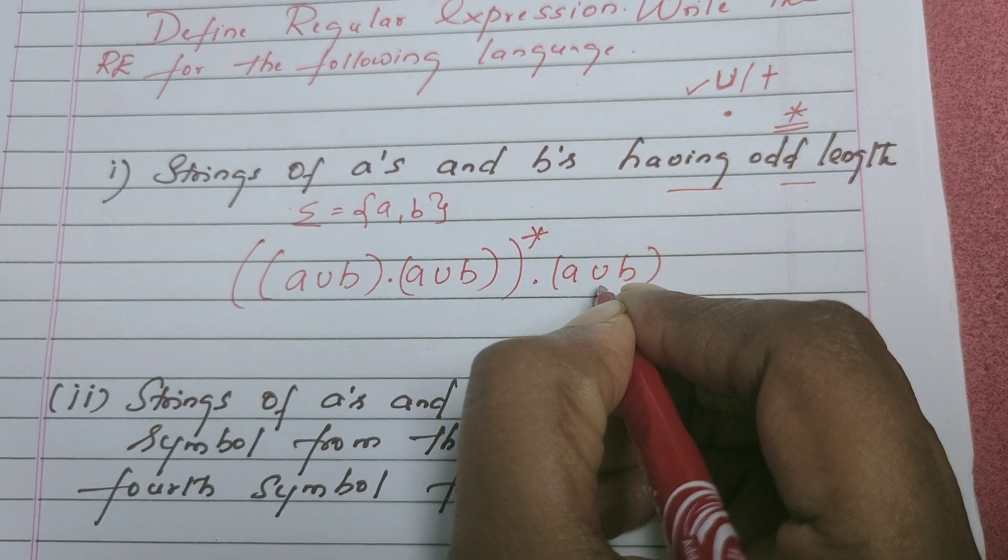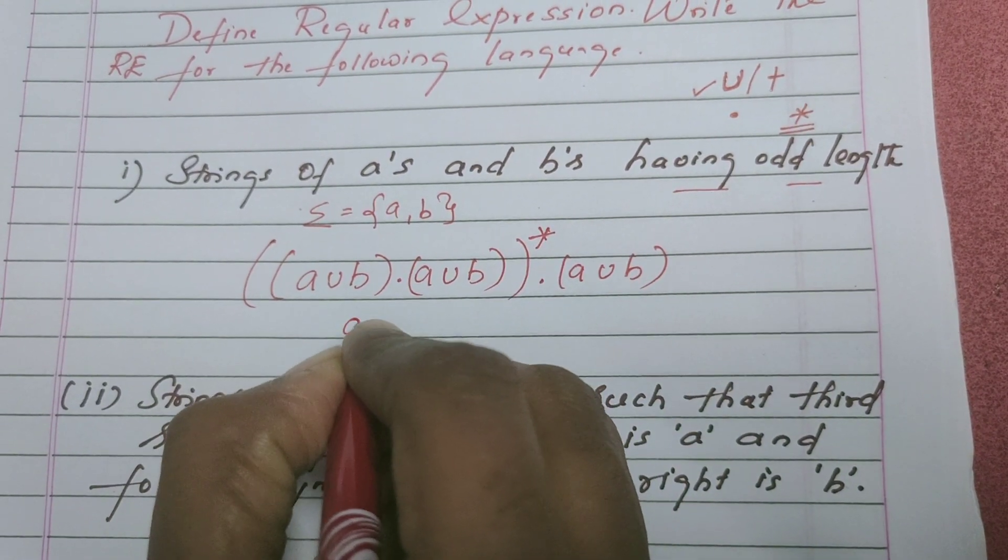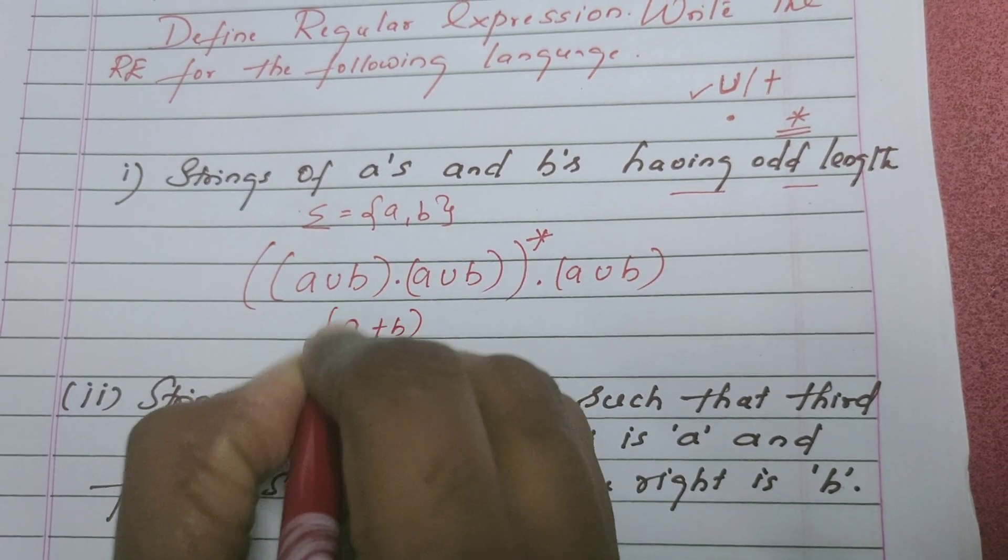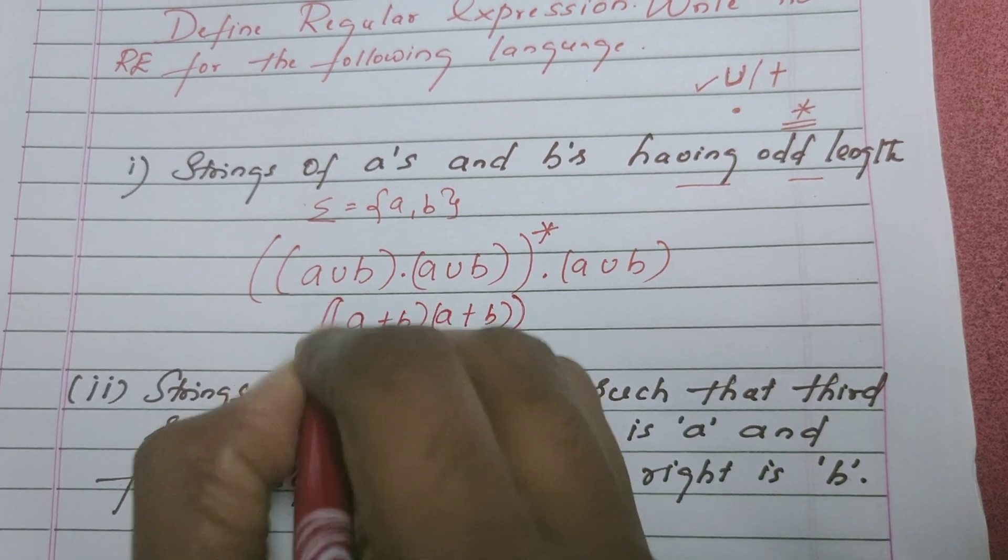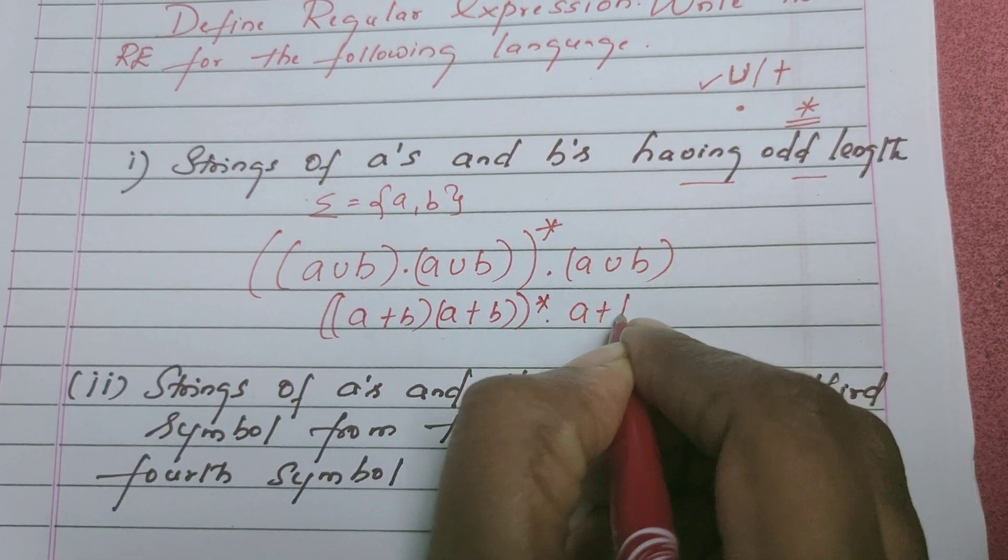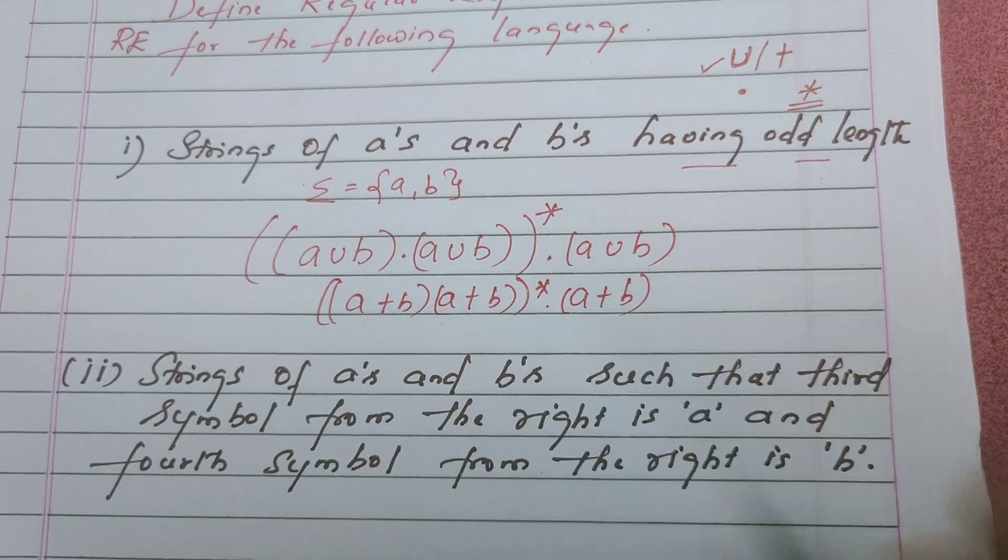can represent it by plus operator also. In the sense, you can write the regular expression like this: (A plus B) dot (A plus B) whole star followed by (A plus B). That's it, any one form you can write.